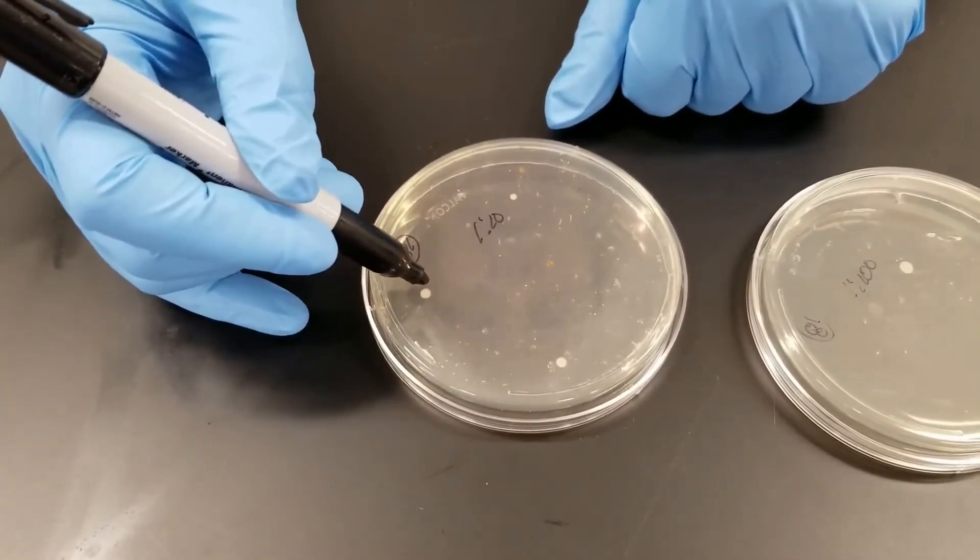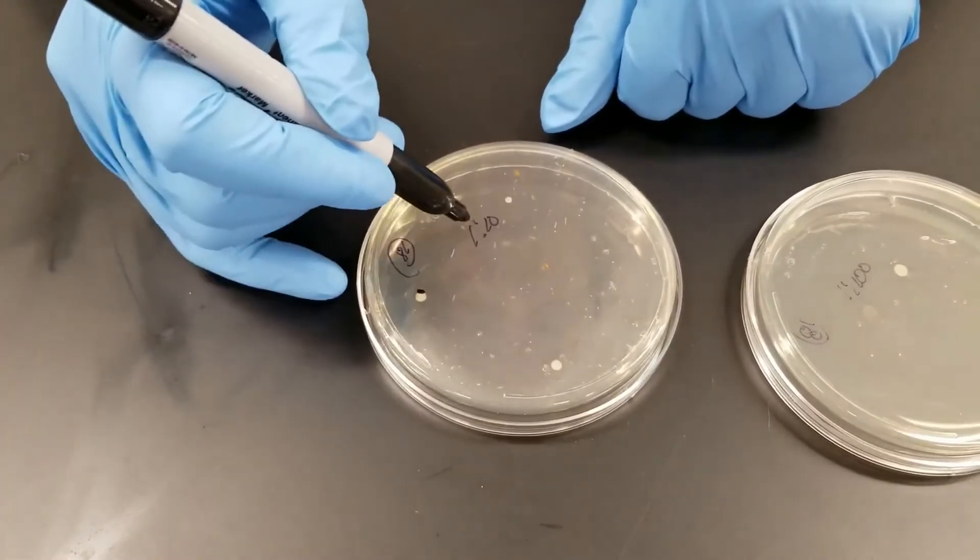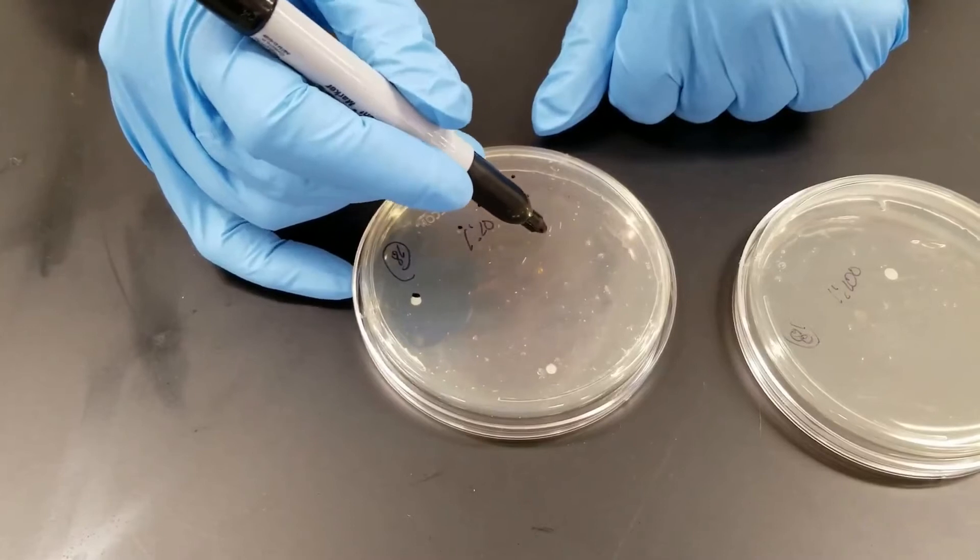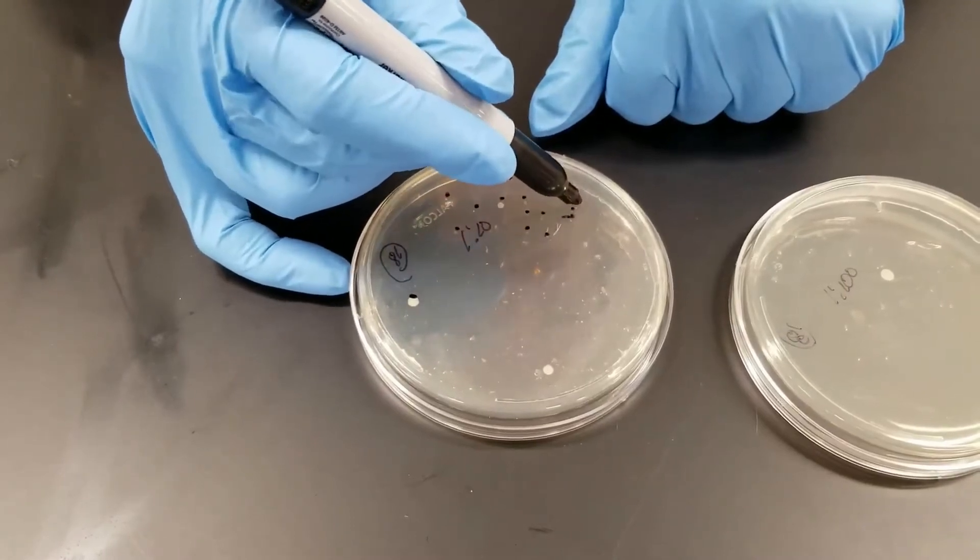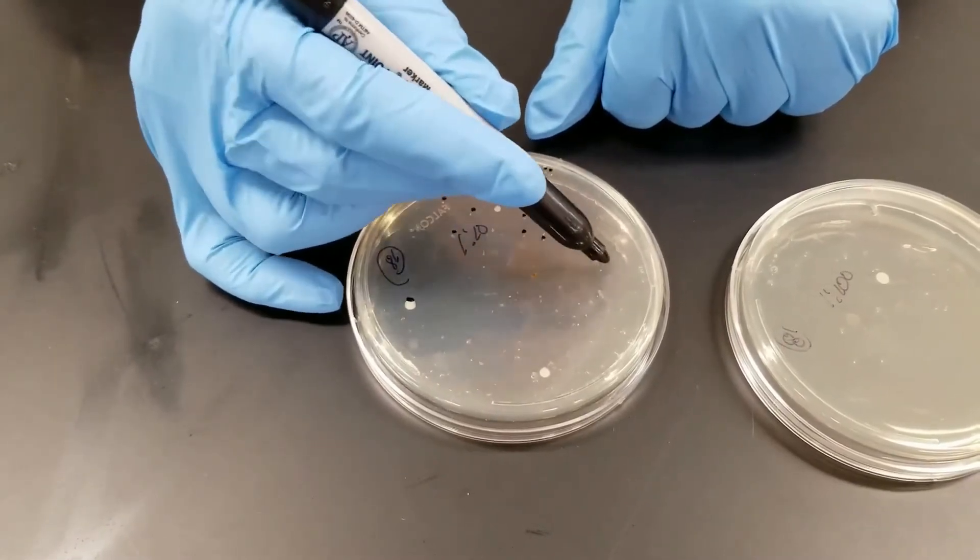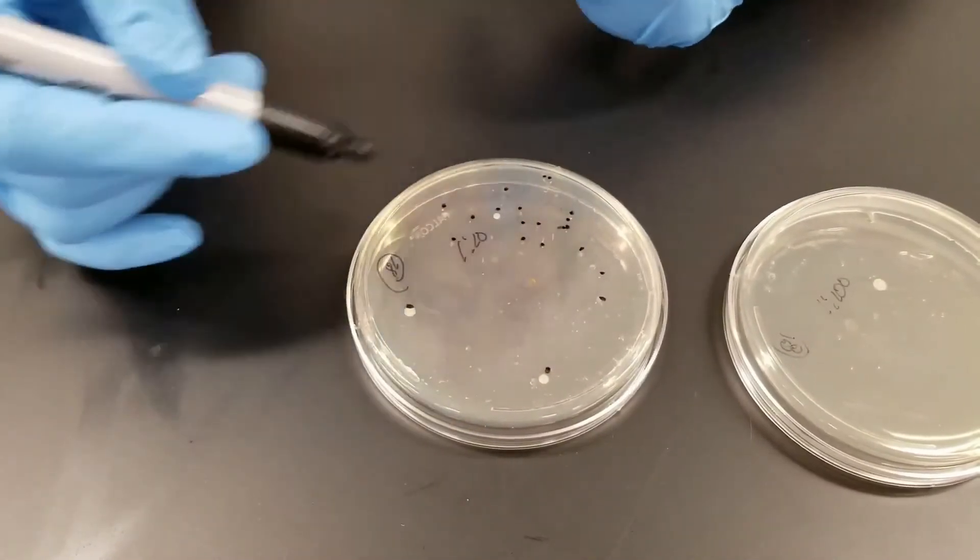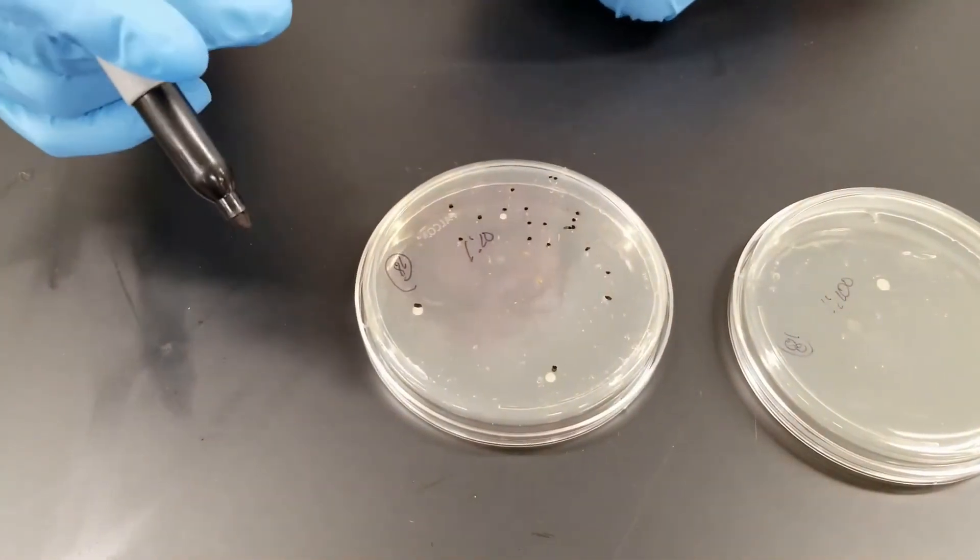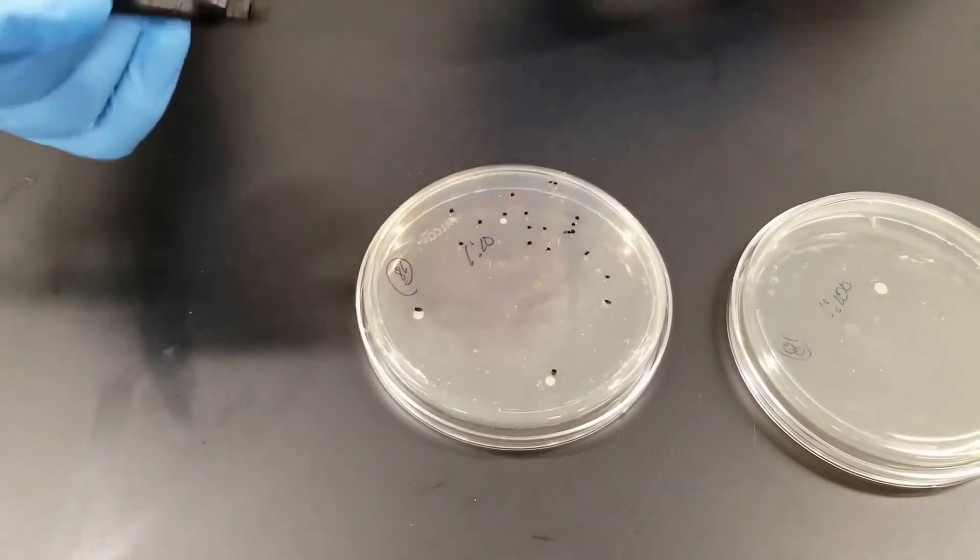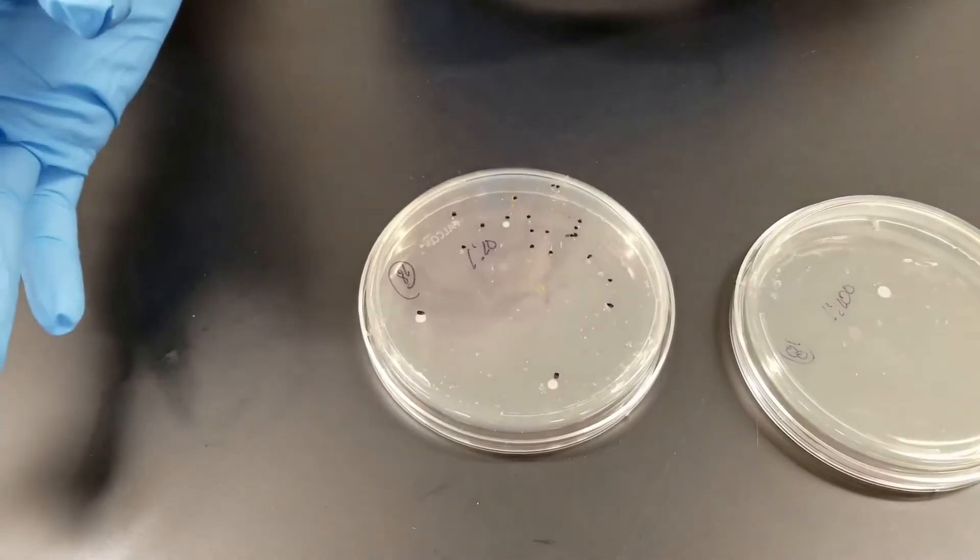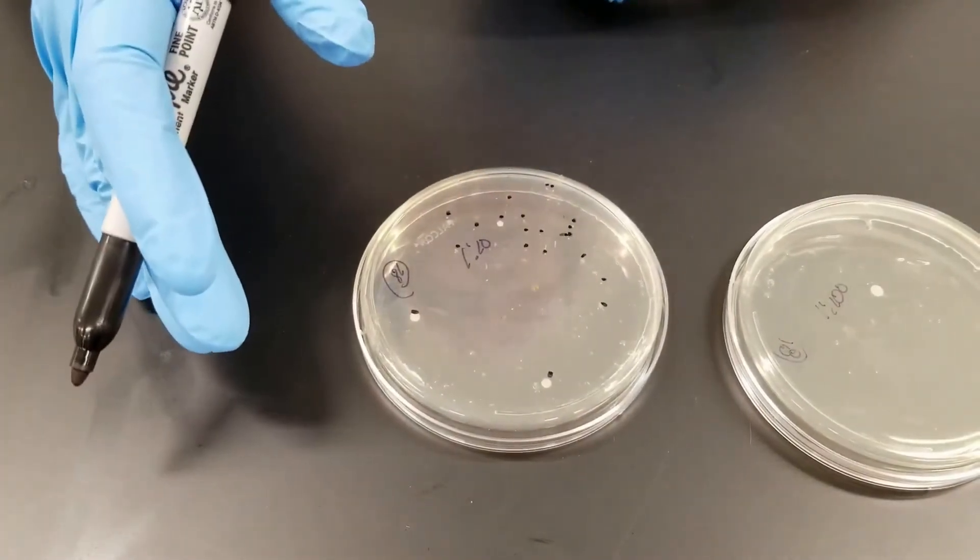And you just kind of mark as you count the bacteria. So if you were to count and start here and go 1, 2, 3, 4, 5, 6, 7, 8, 9, 10, 11, 12, 13, 14, 15, 16, 17, 18, 19, 20, etc., and you would just continue counting the entire plate and mark, and that way you know what you've counted or not. Like I say, you don't count over 300 and you don't count less than 30.